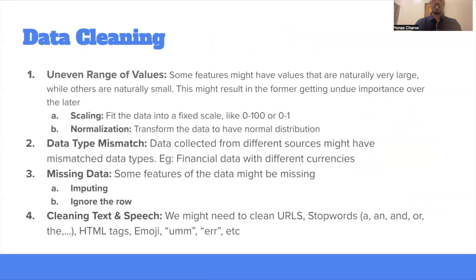Next, let's talk about the importance of preprocessing. Preprocessing can be done for various reasons and some of them are mentioned here. And there are a lot of other reasons to do preprocessing. And in this recitation, I'll go through every one of them and explain how we can preprocess data as well as explain in detail the reasons behind preprocessing. The first one is data cleaning. There are four main reasons to do data cleaning. And the first one is uneven range of values. This means that some features might have values that are naturally very large, while others are naturally very small. So this might lead to the former attribute to get undue importance over the latter.